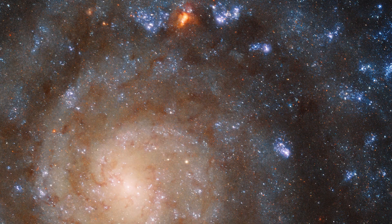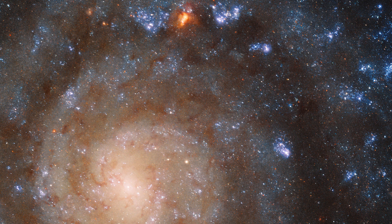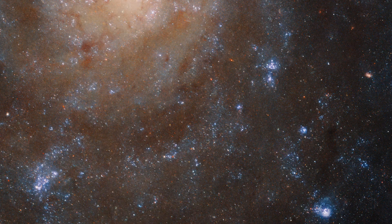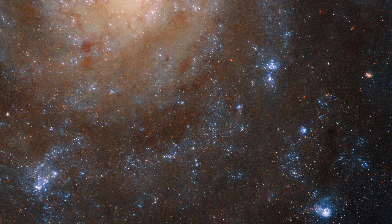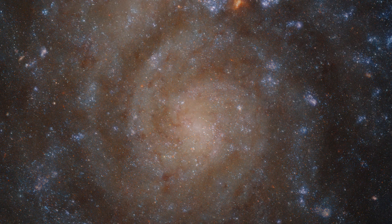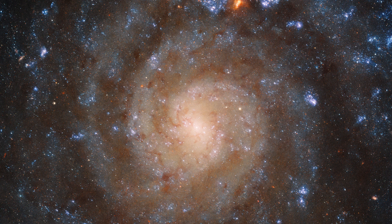In the Hubble image, we see dark regions seemingly separating the spiral arms. This darkness arises from the presence of dusty areas within the galaxy. Ultraviolet and visible light, captured by Hubble, tend to scatter when they encounter interstellar dust, rendering these regions dark.